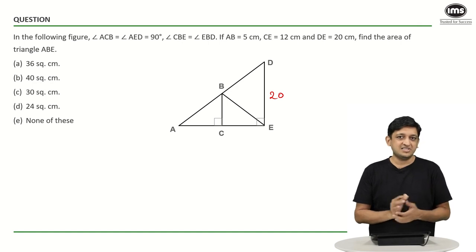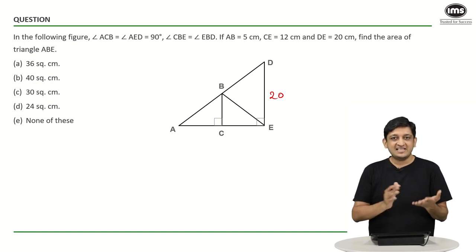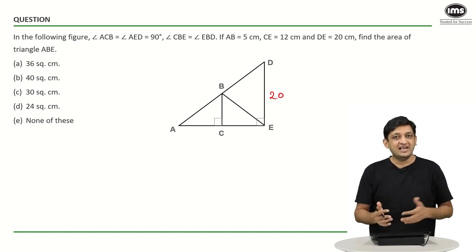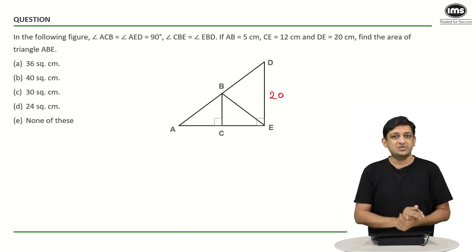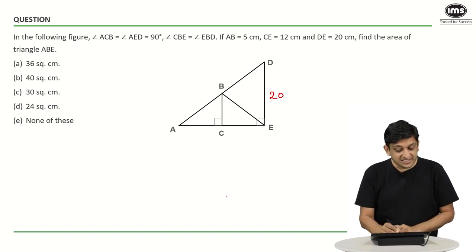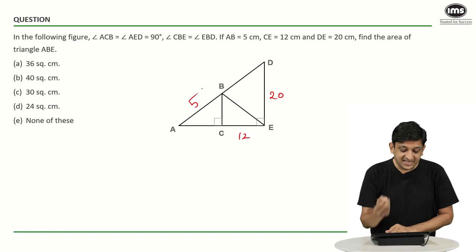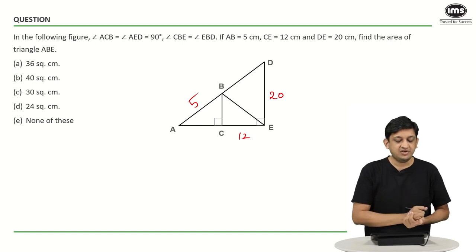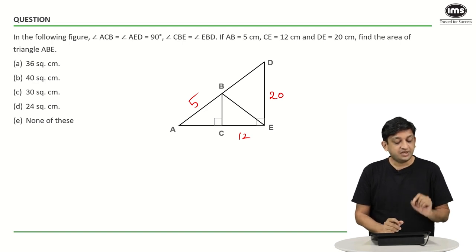There is also a simple elegant solution. Length DE is 20, length CE is 12, side AB is 5, and BC is perpendicular to AE while DE is perpendicular to AE. One key piece of information is that angle CBE equals angle EBD — these two angles are congruent.